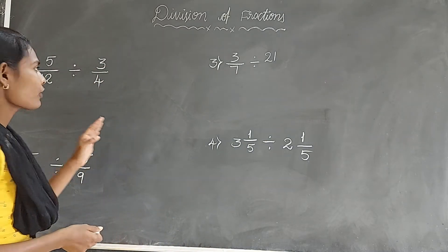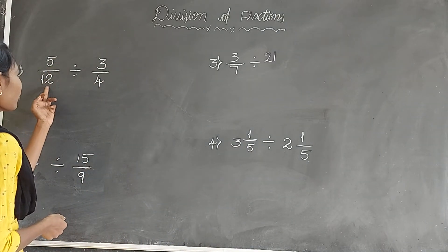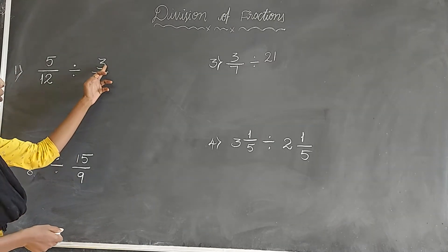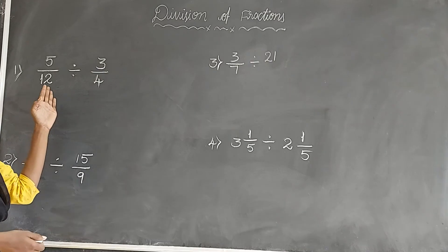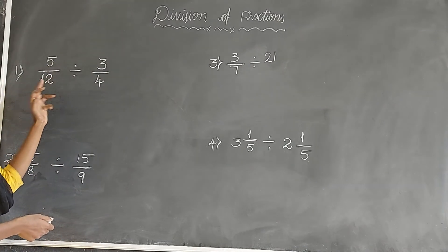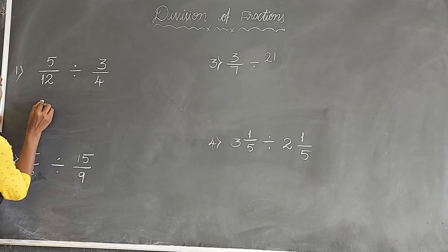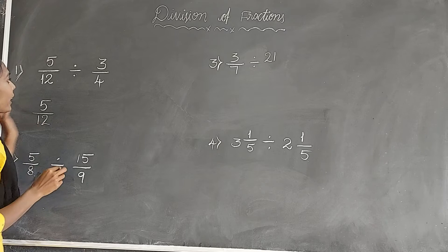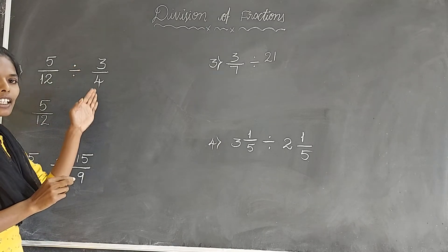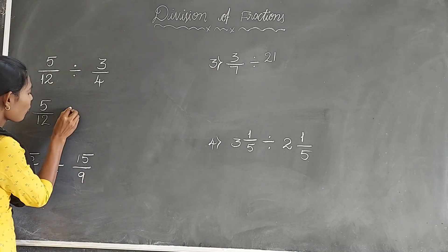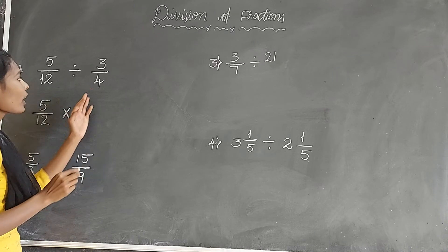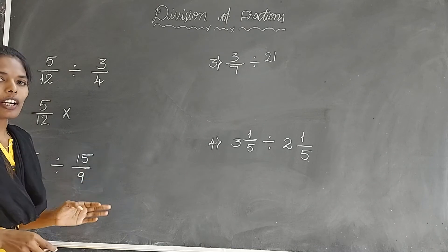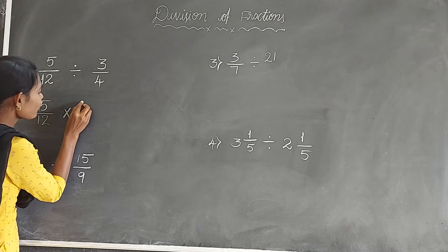Here we have the fraction 5 by 12 divided by 3 by 4. In the first step, take down this fraction: 5 by 12. And instead of the division symbol, write the multiplication symbol. And write the reciprocal of 3 by 4. The reciprocal of 3 by 4 is 4 by 3.